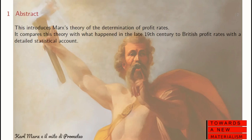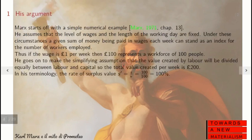This is going to introduce Marx's theory of the determination of profit rates and compare the theory of what happened in the late 19th century to British profit rates with a statistical account. Marx starts with a simple numerical example in Capital 3, Chapter 13.